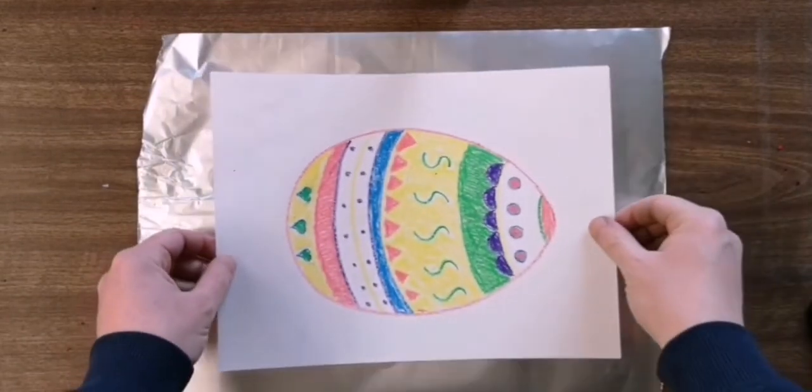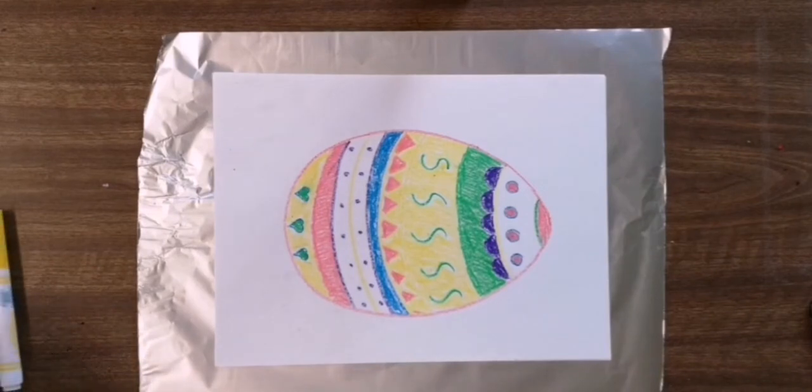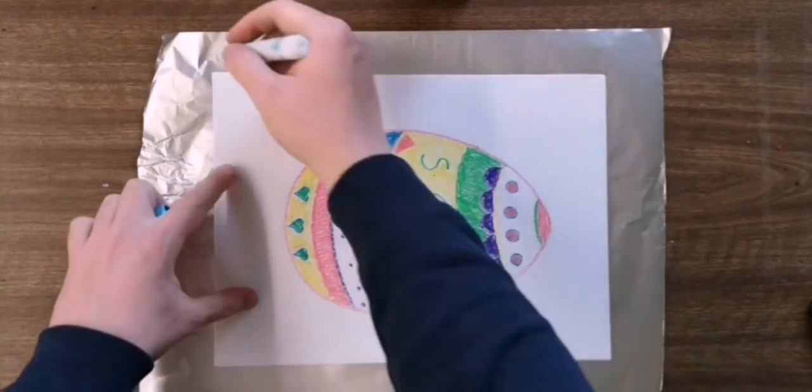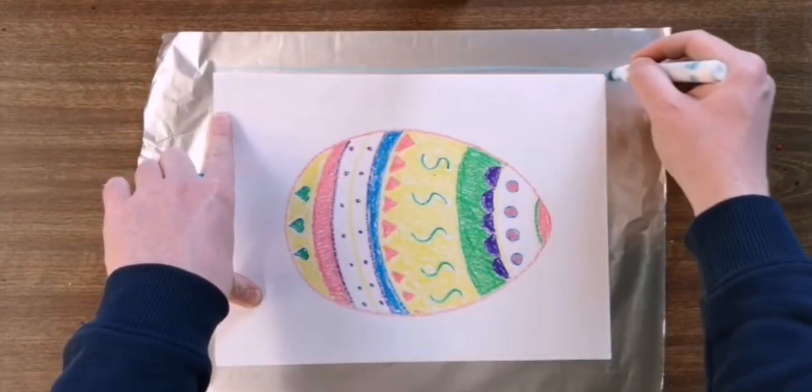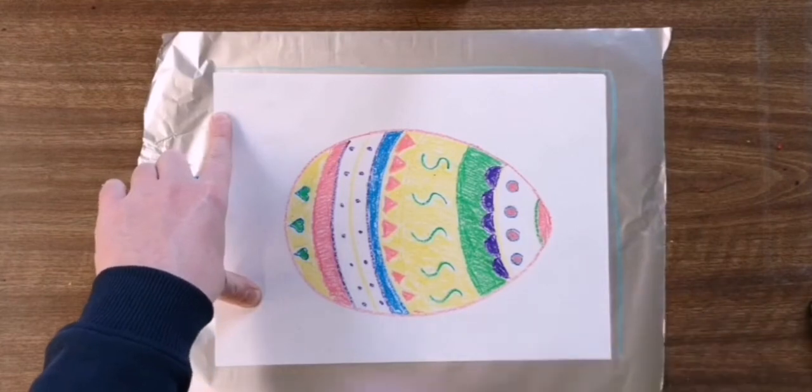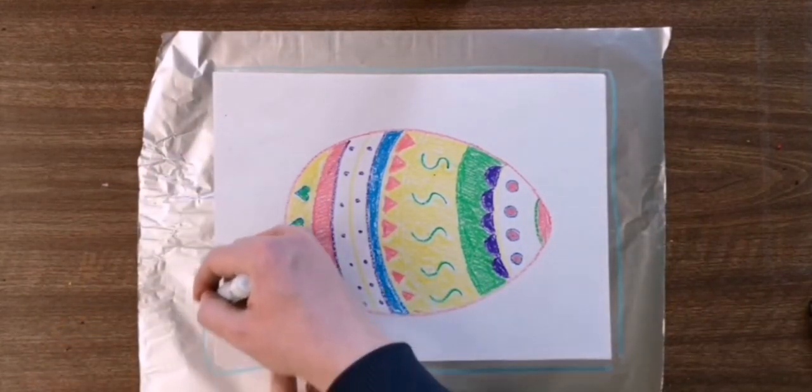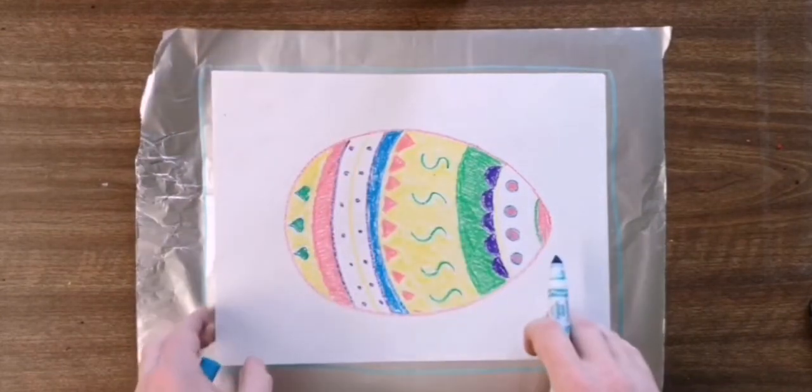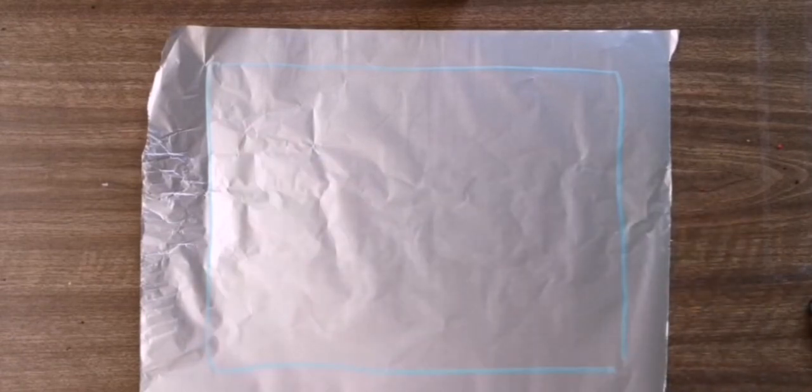All right, so what I'm going to do is just put my paper on the tin foil and I'm going to trace around it with a marker. It doesn't matter what color. And it doesn't have to be perfect either. I take off my picture. I'm going to put that off to the side. And so we have a rectangle and that's going to be your workspace.